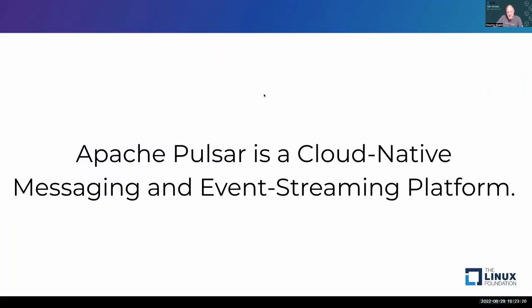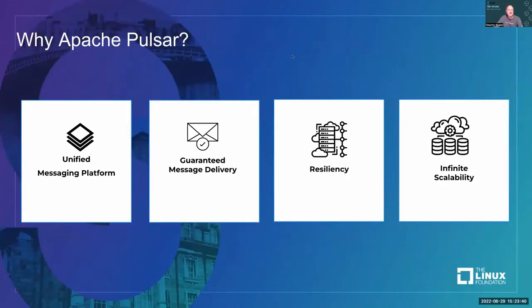We're going to be talking today about Apache Pulsar. It's cloud native — designed from the beginning to run in the cloud, which means we separate compute and storage. We do both messaging and event streaming with one platform, on any cloud, every cloud, every day — guaranteeing message delivery, very resilient, keeping running even when servers go down, and scaling out as large as you need.